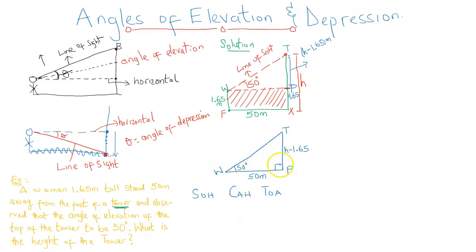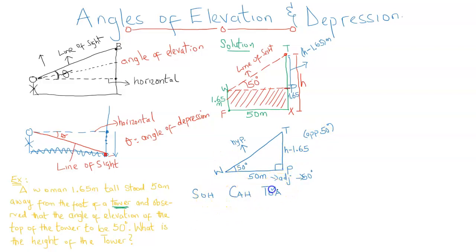This is a right triangle, which makes side WT the hypotenuse. Now, in relation to angle 50 degrees, the side TP is its opposite, while the third side WP is going to be the adjacent of angle 50 degrees. We've got the opposite and the adjacent, so we are going to use the tangent. Tan 50 degrees is going to be equal to the opposite — that's H minus 1.65 — over the adjacent, which is 50 meters.